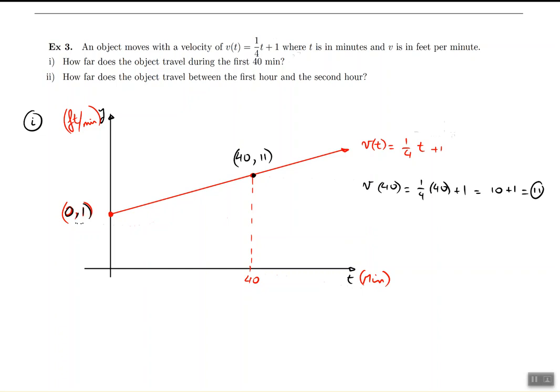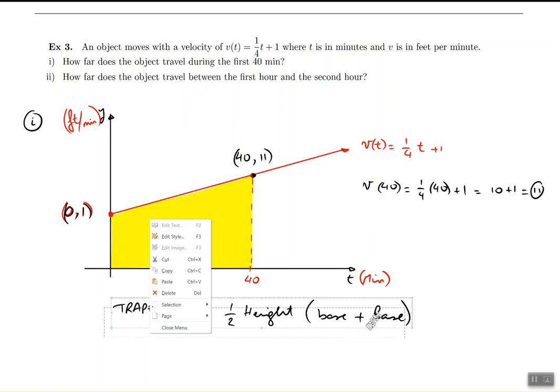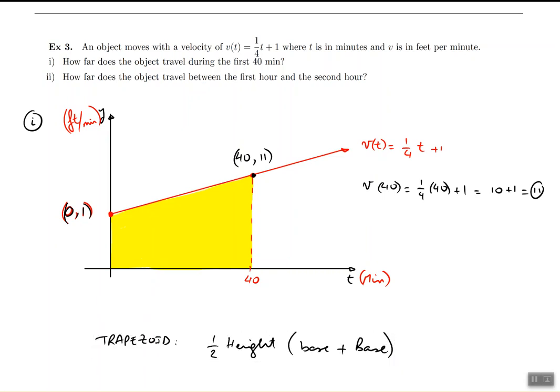And remember the point at the start was (0, 1). And we are looking for the distance traveled by the object in the first 40 minutes. So we're looking for the area inside this shape. Keep in mind that this shape is called a trapezoid. So the area of a trapezoid is one half times the height of the trapezoid times the small base added to the large base. In the trapezoids, the bases are the sides that are parallel to one another. So this right here is the small base, and this over here is the large base.